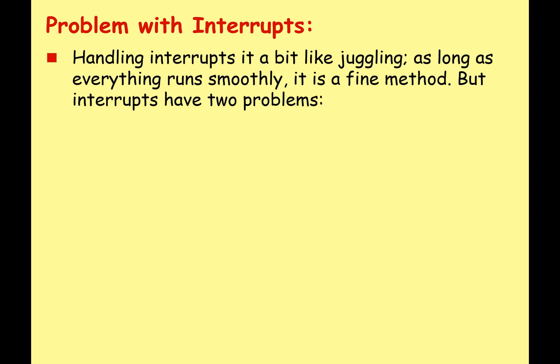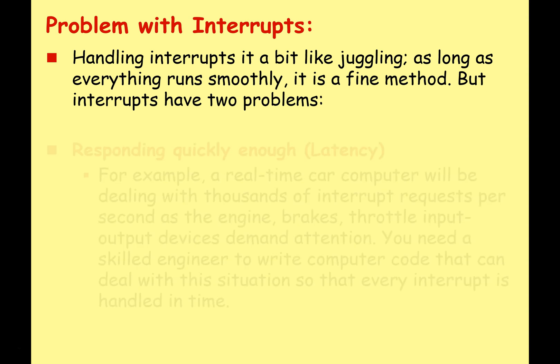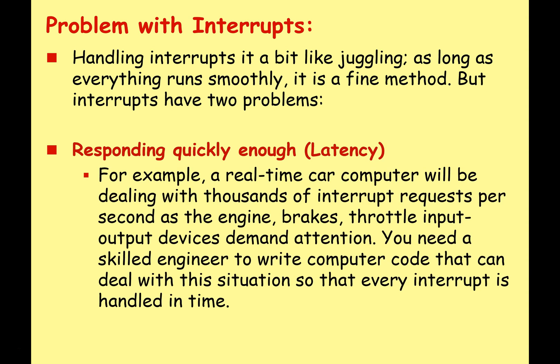There can be some problems with interrupts. Handling interrupts is a bit like juggling — as long as everything runs smoothly, it is a fine method. But there are two main problems. One is responding quickly enough, what we call latency. For example, a real-time car computer will be dealing with thousands of interrupt requests per second as the engine, brakes, throttle, and input/output devices demand attention. You need a skilled engineer to write computer code that can deal with this situation so that every interrupt is handled in time. As we looked at in previous lessons, handling interrupts in a real-time operating system is a complicated business.